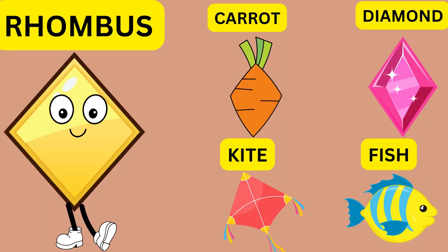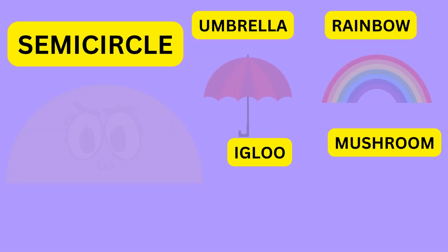Rhombus. Carrot — rhombus. Diamond — rhombus. Thai — rhombus. Fish — rhombus.